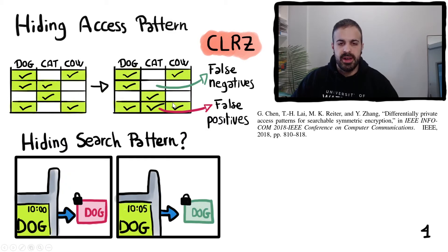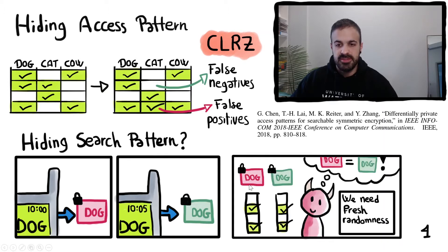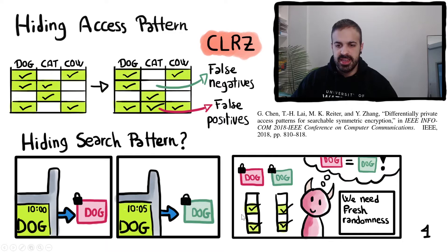Hiding the search pattern however is harder. In order to hide the search pattern we need to generate query tokens differently every time. For example if we query for the keyword DOG at 10 a.m. and then query for the same word five minutes later, we have to ensure that these two query tokens are different. Also, even if they are different, if these tokens generate the same access pattern the adversary could guess that they have the same underlying keyword and therefore recover the search pattern. Therefore we need fresh randomness in the access pattern for every single query that the client issues.